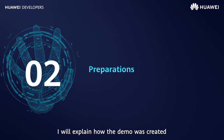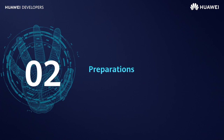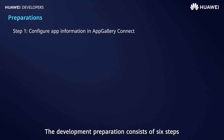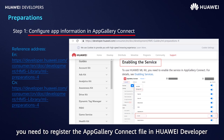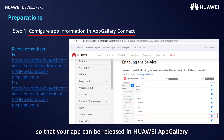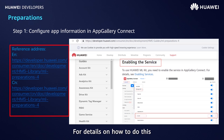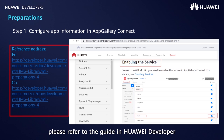Next, I will explain how the demo was created. The first step is development preparation, which consists of six steps. First, you need to register in App Gallery Connect in Huawei Developer so that your app can be released in Huawei App Gallery. Please refer to the guide in Huawei Developer through the provided websites.